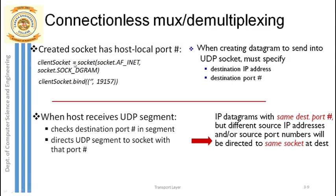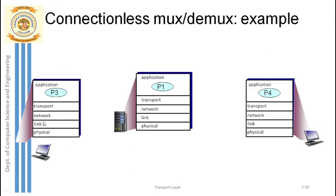Let's look at how mux/demux happens with UDP. The sender, which we call the client or Host A, sends segments to the server via UDP at the transport layer. UDP at the sender side does the multiplexing job — collecting messages — while UDP at the server side does the demultiplexing job, distributing messages to the correct processes.